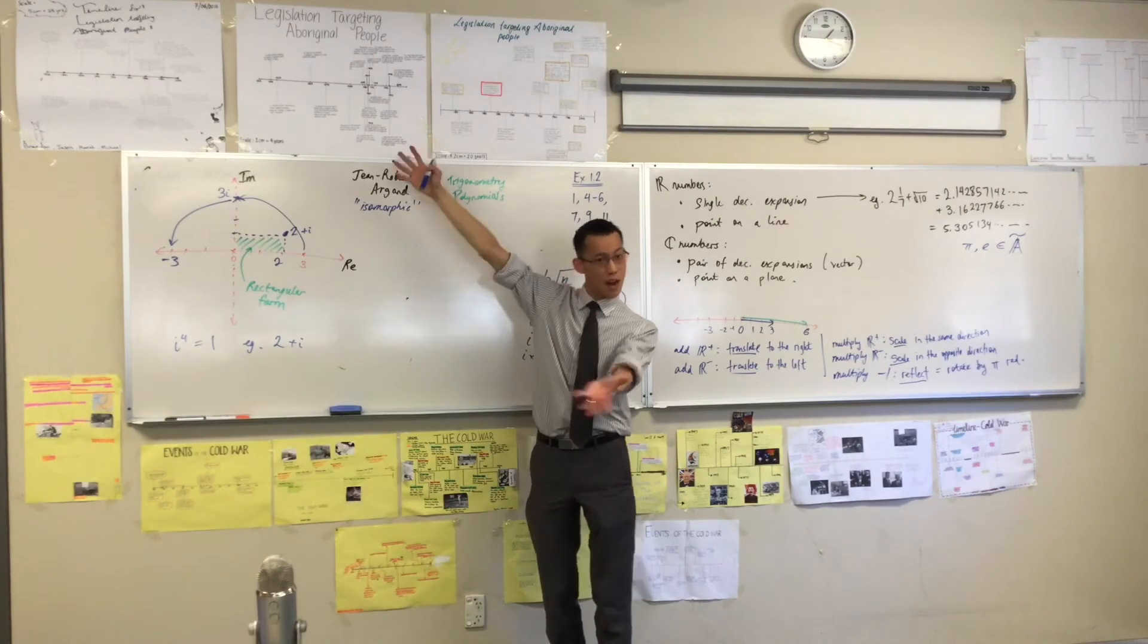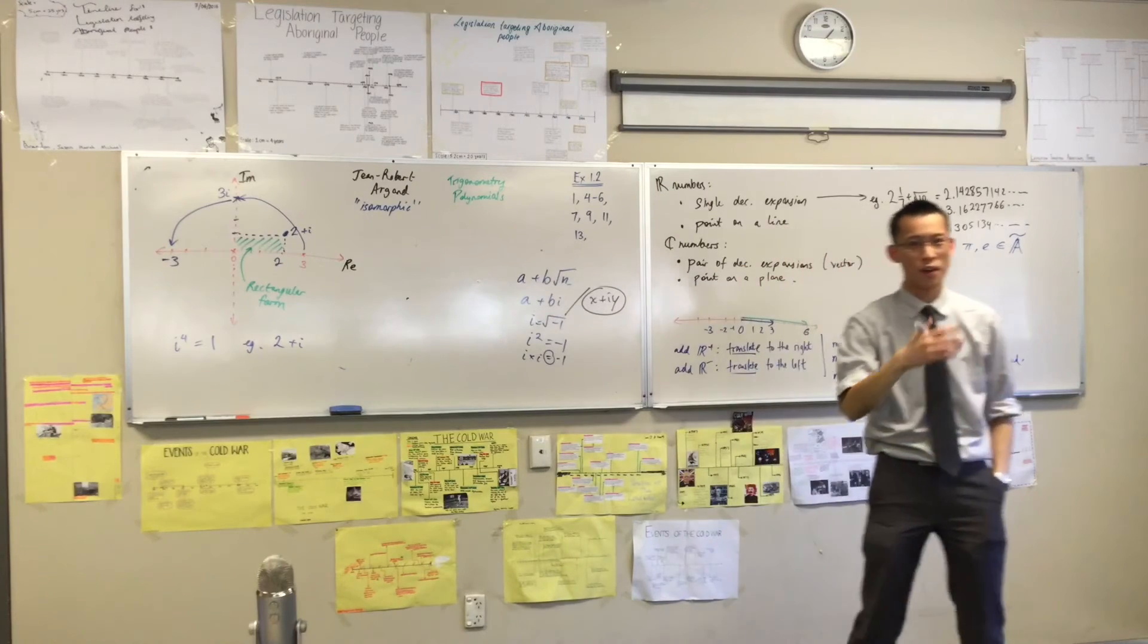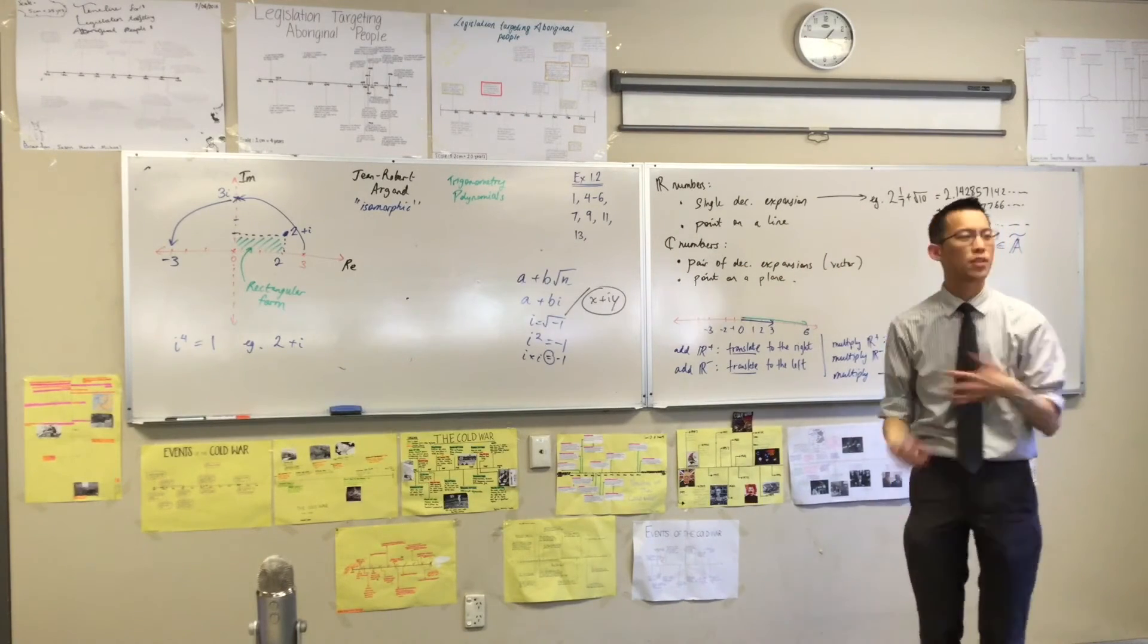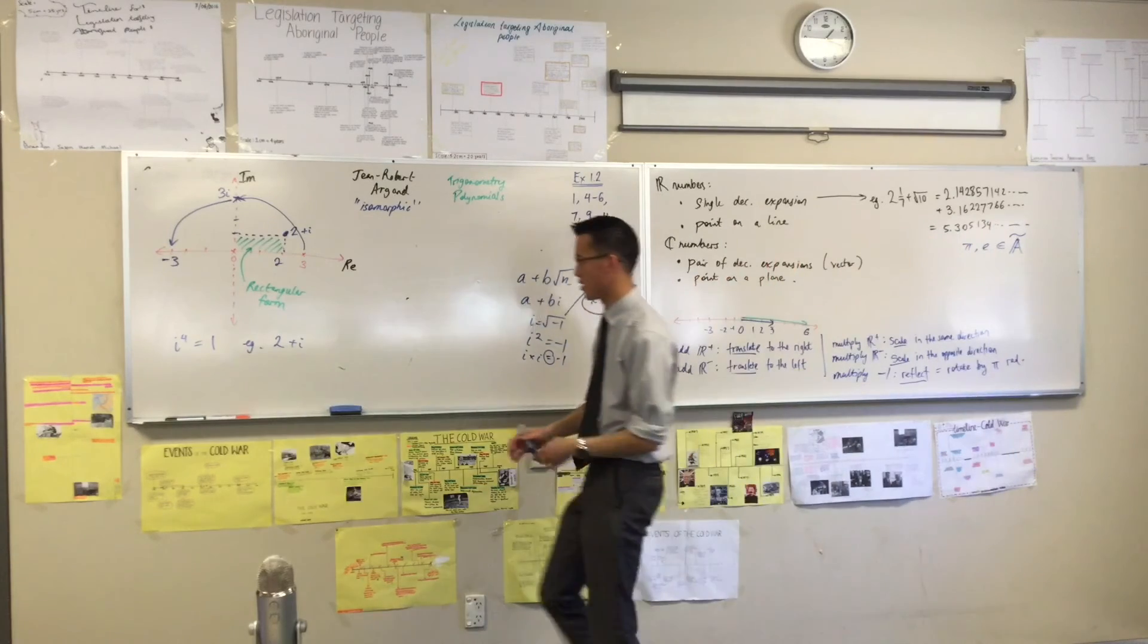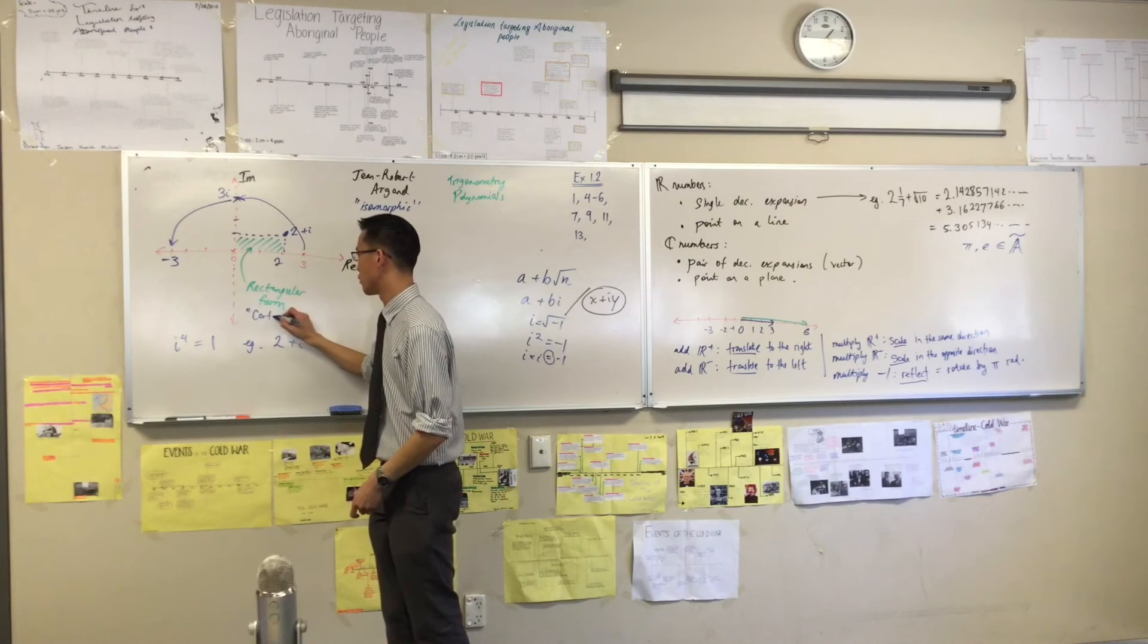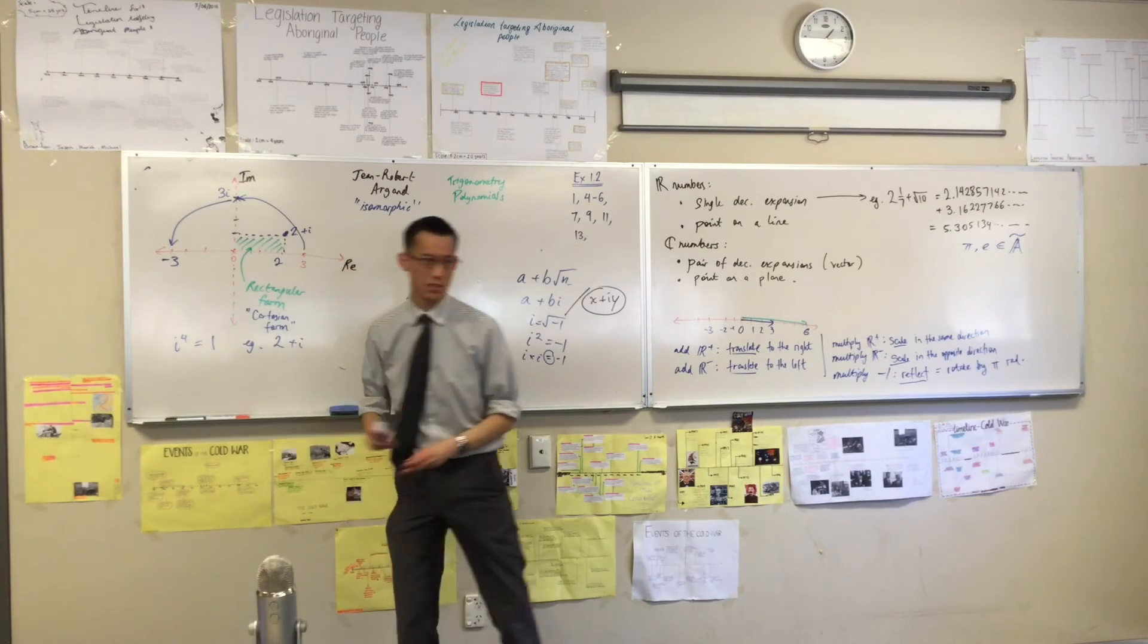To where you have a real number and an imaginary number combined together. Now because they're so similar, in addition to being called rectangular form, we also call it Cartesian form.